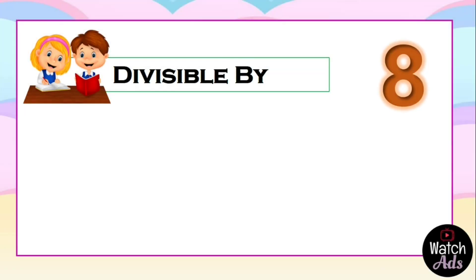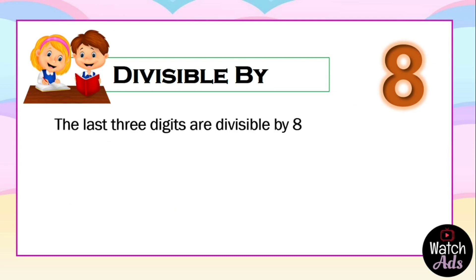To check divisibility by eight, the last three digits should be divisible by eight. I looked through a lot of articles to find an easier way to do this, because dividing three digits by eight manually takes time. Since I haven't found a shortcut, I composed my own original method of testing divisibility by eight.